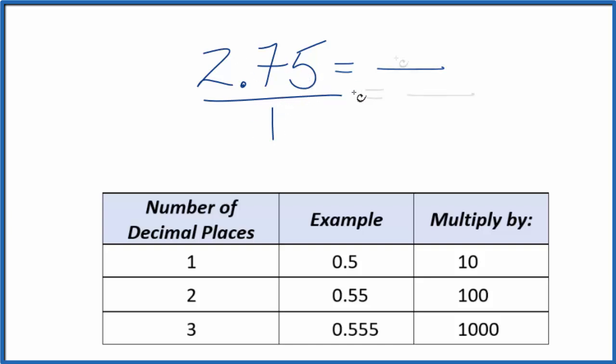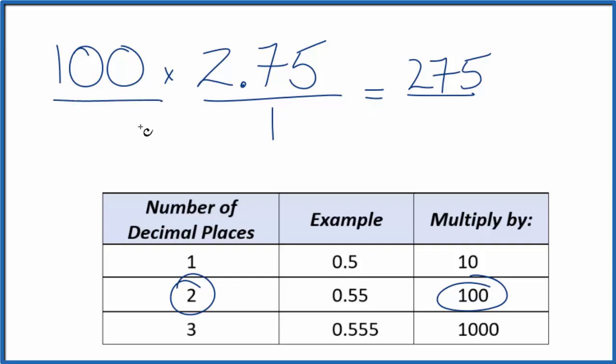Next, because we have two decimal places, we're going to multiply by 100. Like this: 100 times 2.75, that's 275. So now we have a whole number, but 275 doesn't equal 2.75, so we also need to multiply the bottom by 100. 100 times 1, that gives us 100.